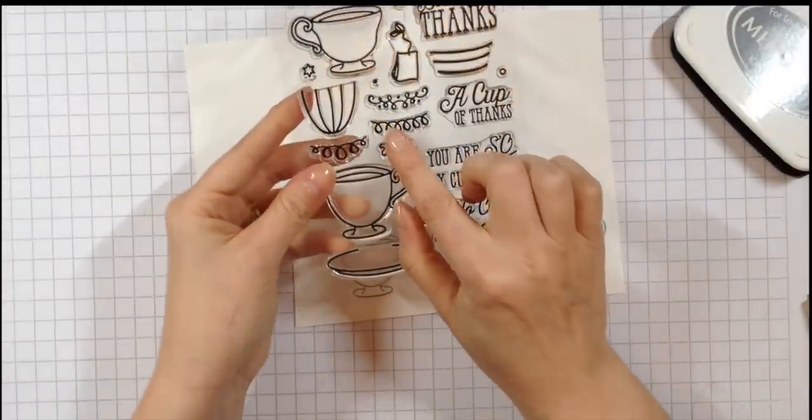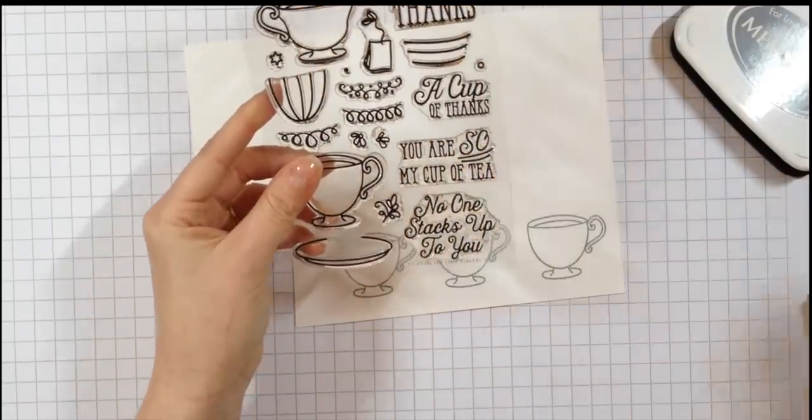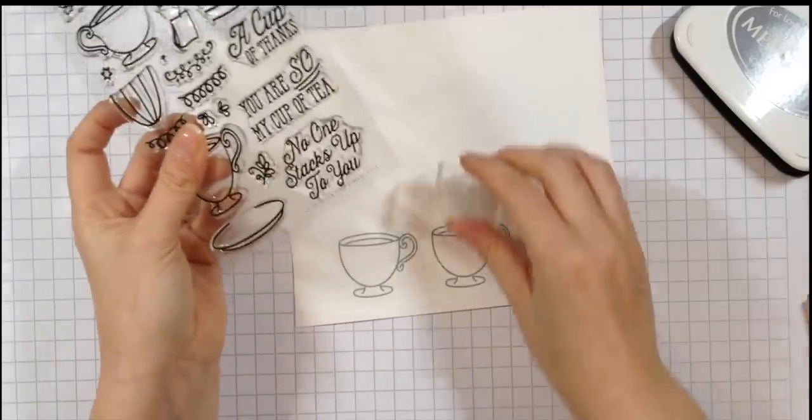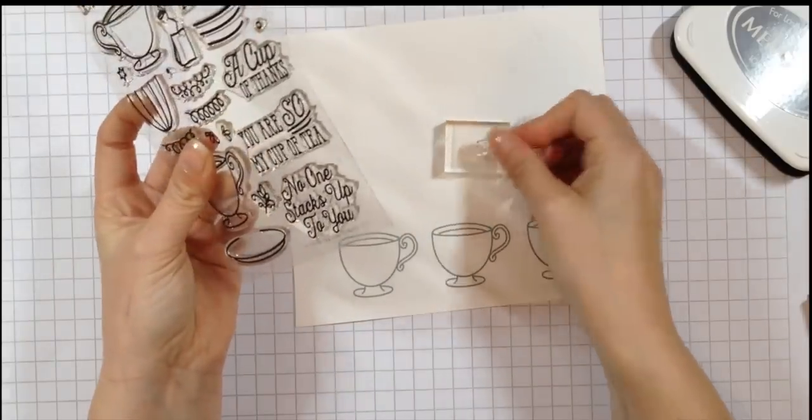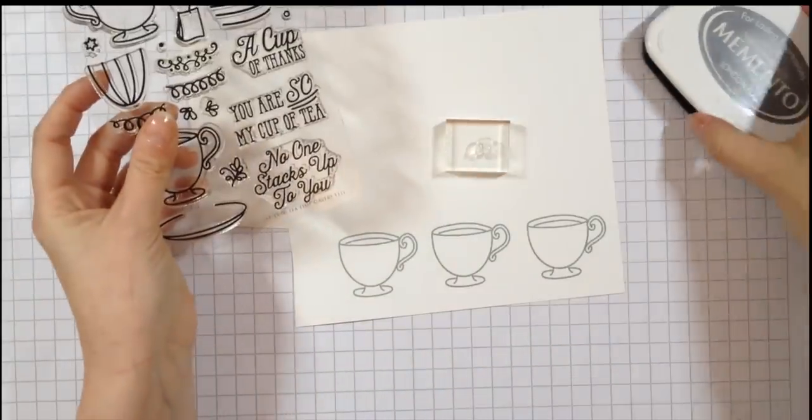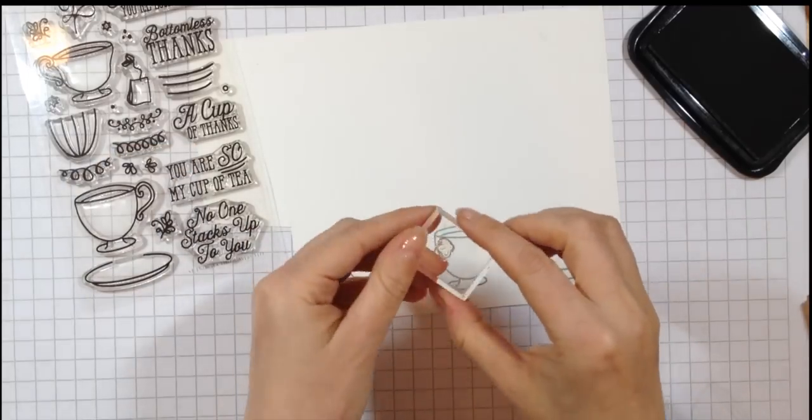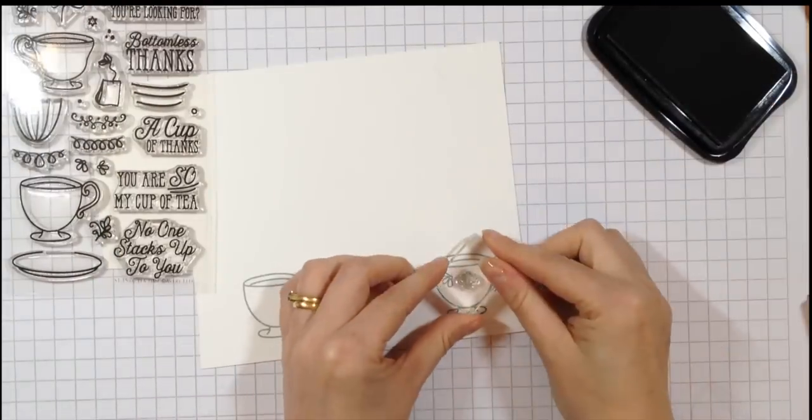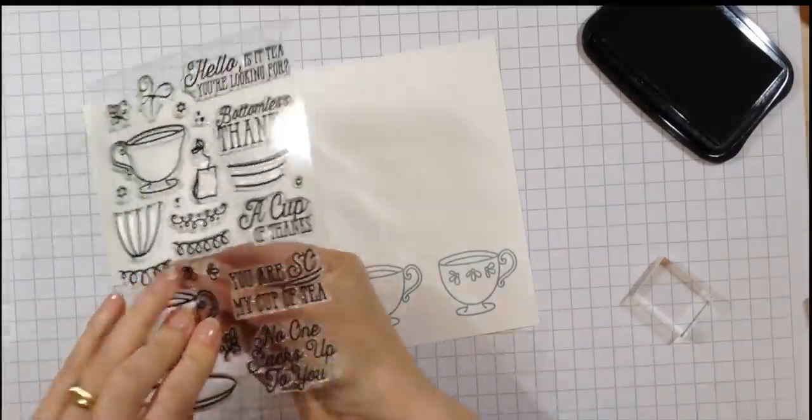I'm going to give each of the cups a different design. Included in the set are lots of little detailed images that you can design various different teacup styles with. For the first one, I'm just going to repeatedly stamp, just three times, the little floral image to give it a bit of detail.